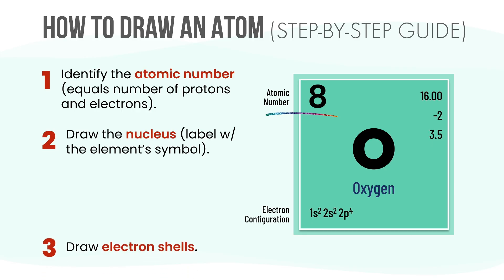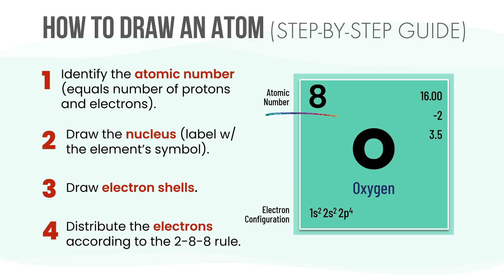Step 3: Draw the electron shells or energy levels around the nucleus. Step 4: Distribute the electrons following the 2-8-8 rule. Start from the innermost shell and move outward. This process helps us visualize the atom's structure and understand its behavior in reactions.